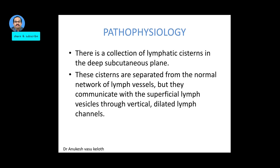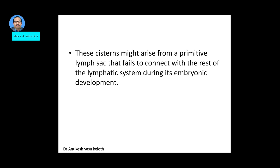Regarding the pathophysiology of congenital lymphangioma: there is usually a collection of lymphatic cisterns in the deep subcutaneous plane. These cisterns are separated from the normal network of lymph vessels, but they are still communicating with the superficial lymph vessels through vertical dilated lymph channels. These cisterns may arise from a primitive lymph sac that failed to connect with the rest of the lymphatic system during the embryonic period.